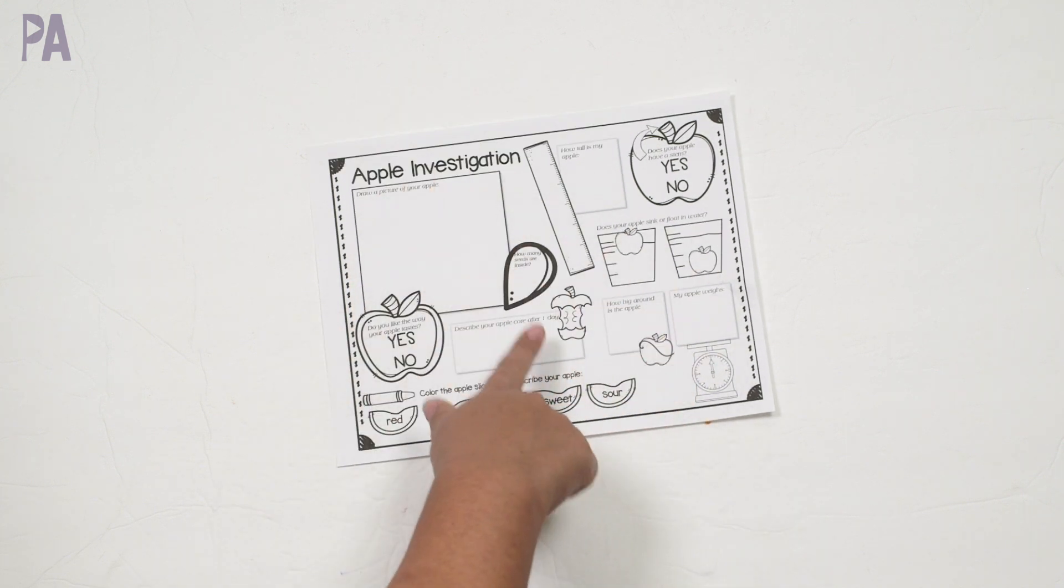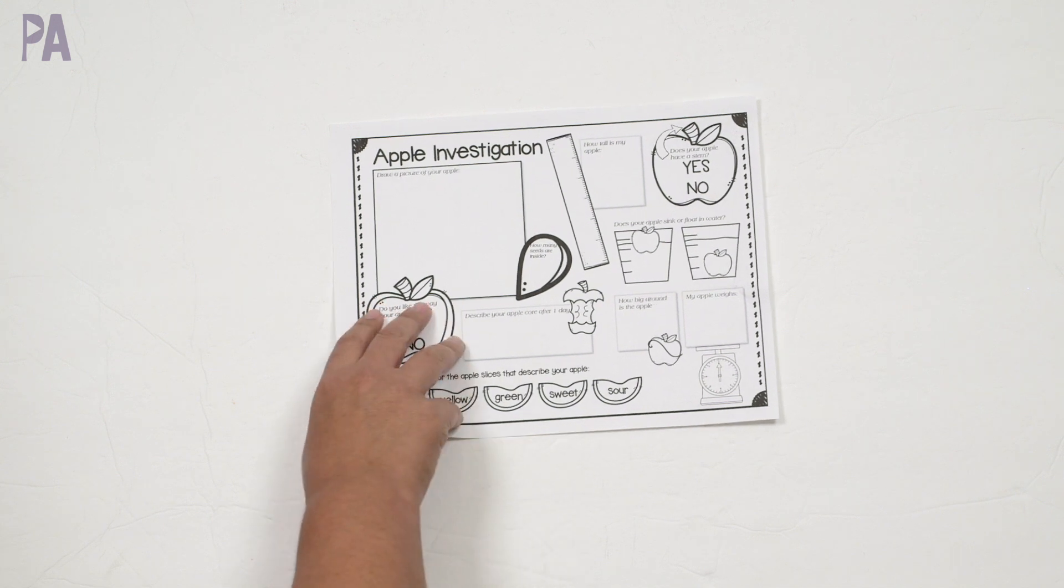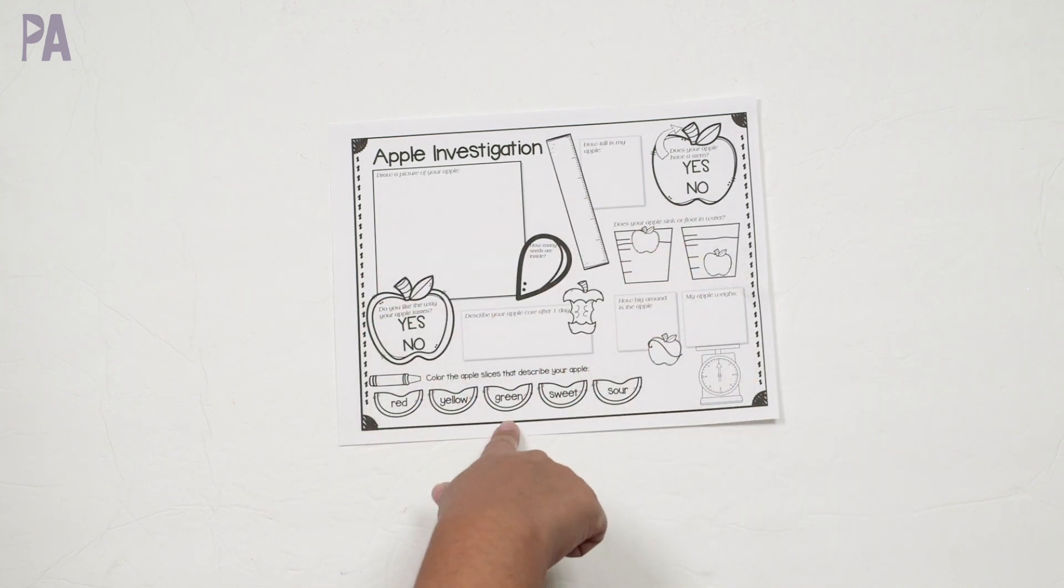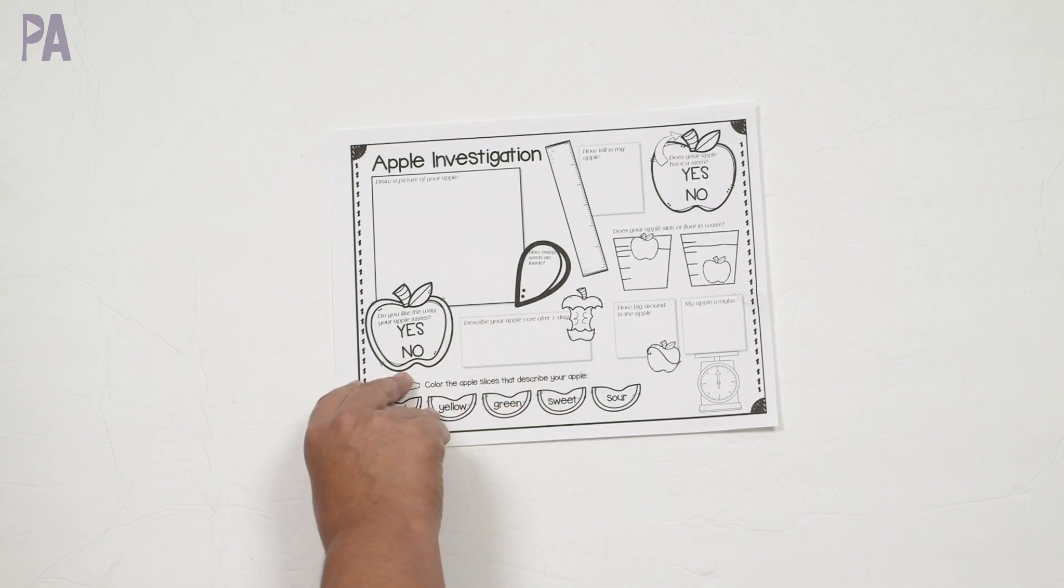So there's a lot of things to do just on this one sheet, which I think is amazing, which I really like. So you can just use this and guide through every activity to fill it out. Once again, a great opportunity to use this after you go apple picking, or you can just use an apple that you get from the store.